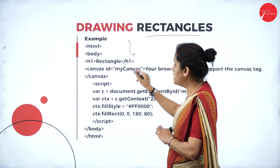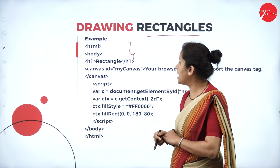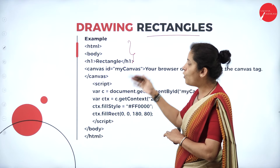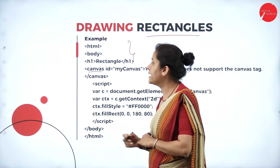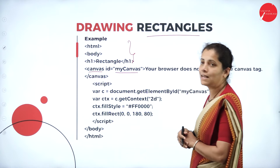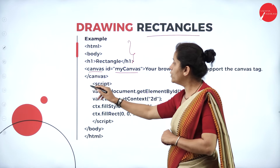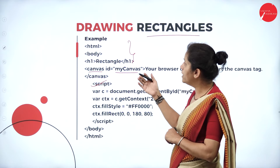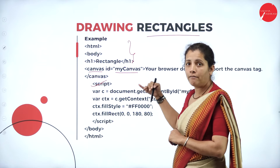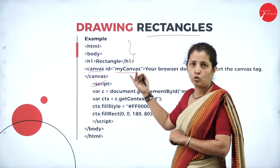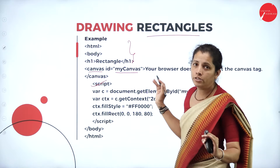This is my HTML code. I'm going to write the script — the script can be written in the body section or above the body. The canvas id here is 'myCanvas'. To use canvas, I must have the HTML code along with the JavaScript.